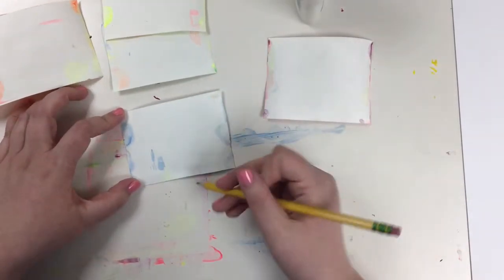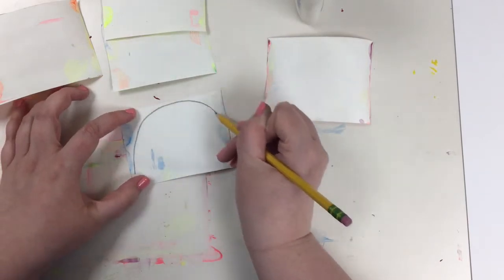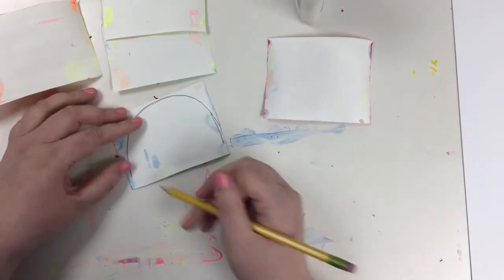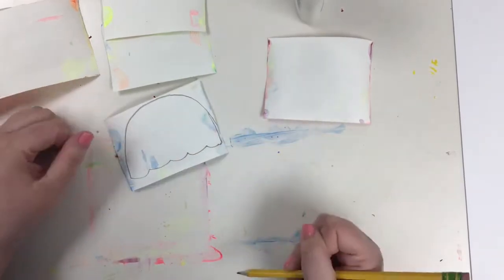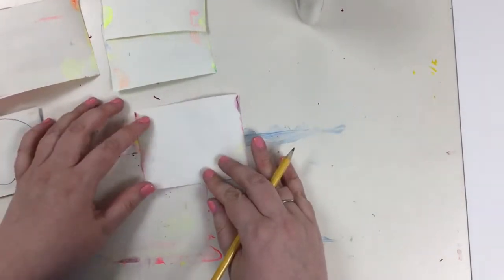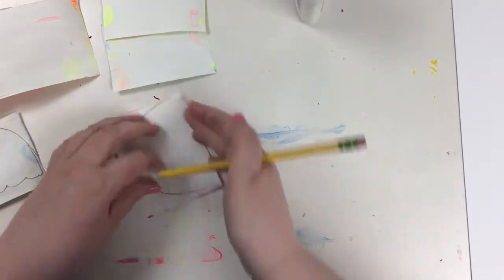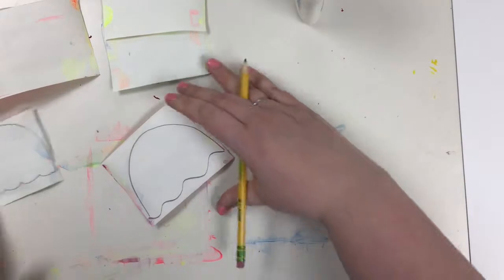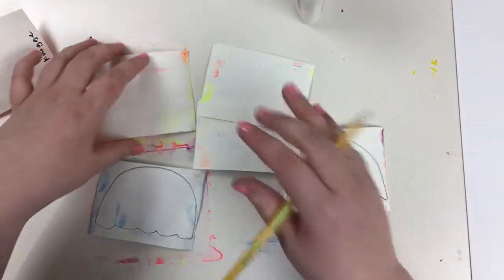So here's how I would draw an ice cream scoop. I would make an arch, and then on the bottom, ice cream kind of curves. Another way, you could make a wiggly line to make a scoop, but you want to draw these on the back of each one.